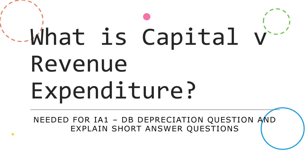This is a vodcast on the difference between capital and revenue expenditure. You'll need this information for the IO1, and in particular the diminishing balance depreciation question in determining the actual cost of the purchase of the asset. It may also pop up as an explained short answer question.